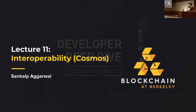Hey guys. My name is Sonny. I used to run the R&D department at Blockchain at Berkeley. I started working on Cosmos and Tendermint. Today I'll be talking mostly about interoperability, and I'll try to keep it very general purpose rather than focusing too much specifically on Cosmos. I hope I can explain what the relationship between different interoperability platforms is — like Cosmos, Polkadot, etc.